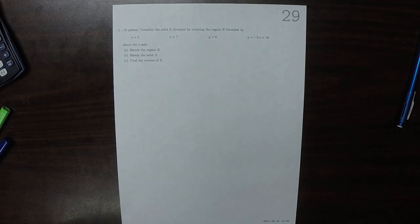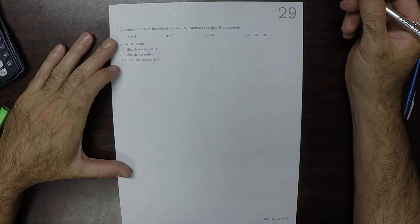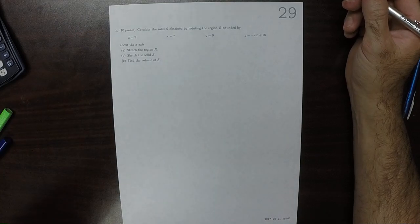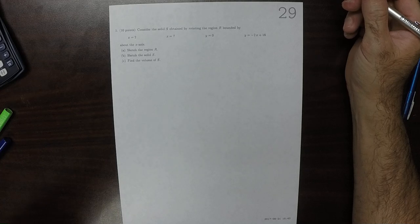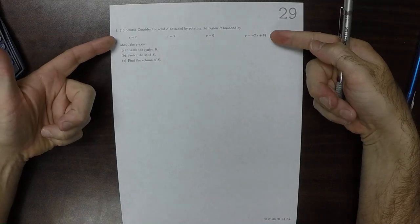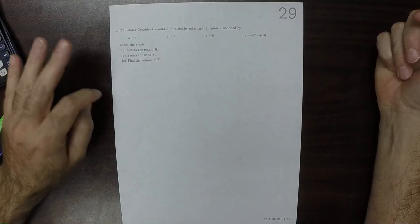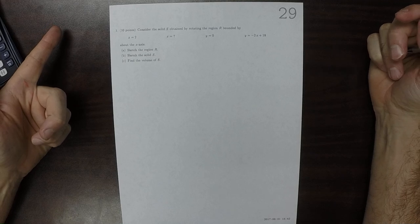This is the solution to Written Homework 29. So a region described bounded by these is in the plane, and then it's being rotated around the x-axis to make a solid.